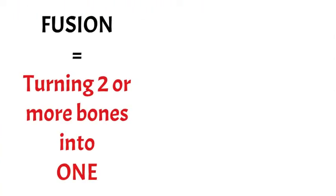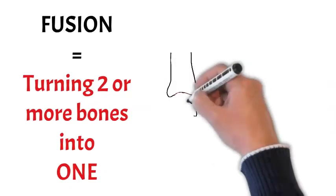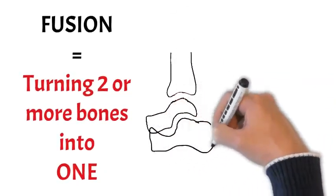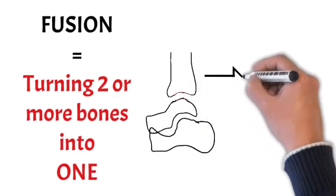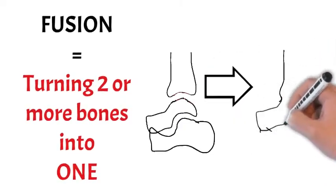Now a fusion means turning two or more bones into one bone, so there's not a joint there anymore that moves. And in terms of an ankle joint, we're going to draw what your bones look like in the ankle on the side, and then what it looks like with a fusion.